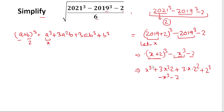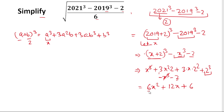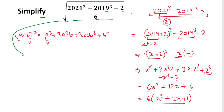Now simplifying: x³ and negative x³ cancel. We have 3 times 2 which is 6, giving 6x². Then 3 times 4 is 12, giving plus 12x. Then 2³ is 8, and 8 minus 2 is 6. So we have 6x² plus 12x plus 6. We can take 6 as a common factor, leaving x² plus 2x plus 1.